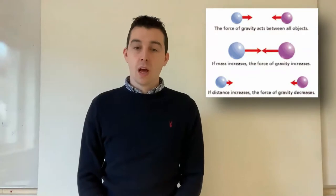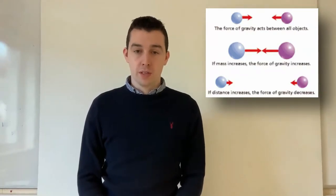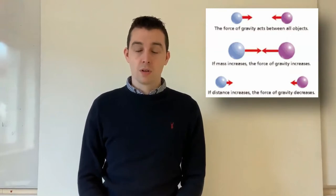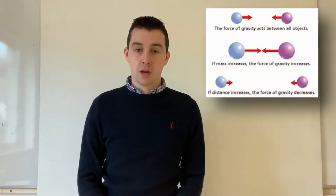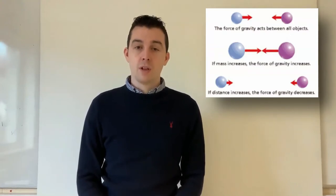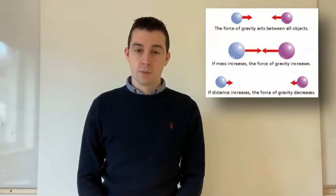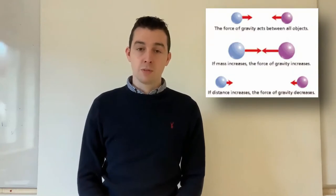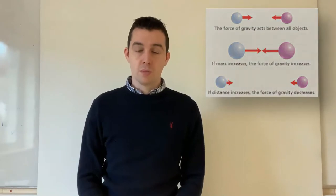So, how does gravity work? There are two ideas you need to be aware of, and these ideas work throughout the universe. One: the more massive an object, the greater its gravitational pull. Two: the closer two objects are together, the greater the gravitational attraction between them. Therefore, putting these ideas together — the more massive two objects are, and the closer they are together, the greater the gravitational pull between them.